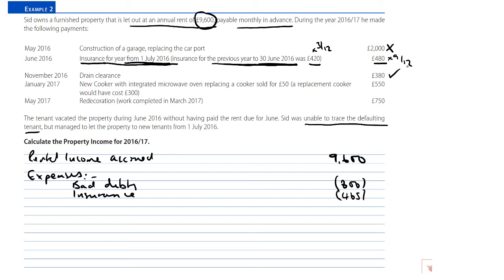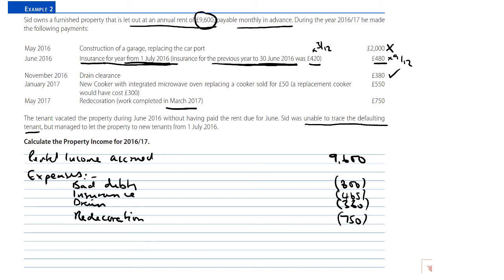Drain clearance at £380 — normal repair, fully allowable. Then redecoration, work completed in March 2017, all incurred in the 2016-17 tax year — another £750 allowable deduction.